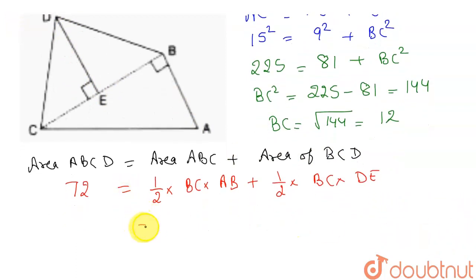So if I put the values inside it, BC I have calculated here as 12. AB is given to us as 9. This is given as 9, this is given as 15. This I have calculated as 12 and this we have to find. So now this AB is 9, half, BC I have calculated as 12, DE I have to calculate, and this sum is given to us as 72.